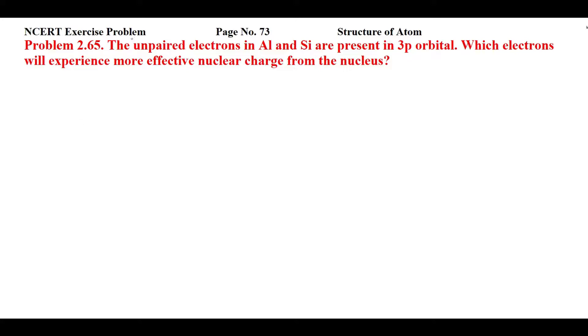Students, this is NCERT exercise problem 2.65 from page number 73 of structure of atom. The unpaired electrons in aluminum and silicon are present in 3p orbital. Which electrons will experience more effective nuclear charge from the nucleus?